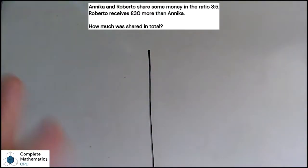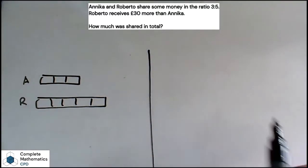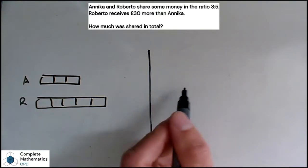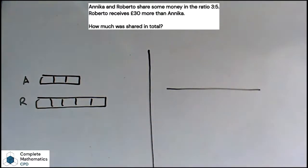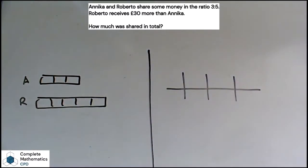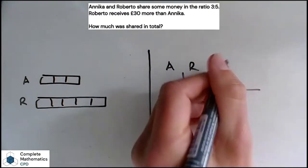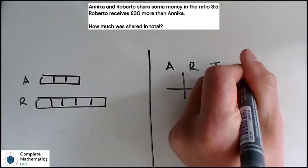So on the left we're going to set out the bar model. We've got this ratio of 3 to 5, so Anika gets three parts and Roberto gets five parts. We'll label that A and R. Now on the right I'm going to set out the ratio table model. When I'm doing this in the first instance, I'll often go with four columns: the people in the question, so Anika and Roberto, a total column, and also a difference column.